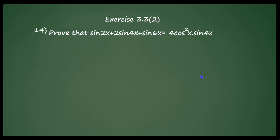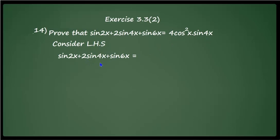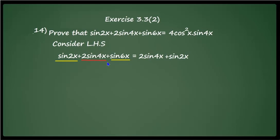Let us take question 14: prove that sin 2x + 2 sin 4x + sin 6x = 4 cos²x · sin 4x. Consider the left-hand side: sin 2x + 2 sin 4x + sin 6x. Since sin 4x appears on the right-hand side, we leave 2 sin 4x untouched and rearrange the remaining terms: 2 sin 4x + (sin 2x + sin 6x).